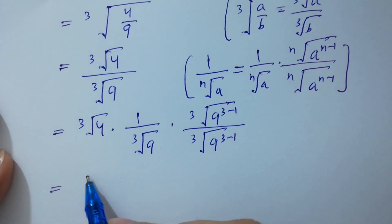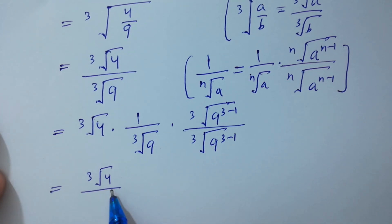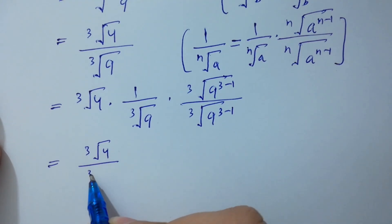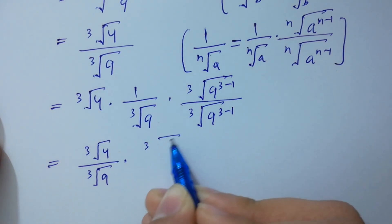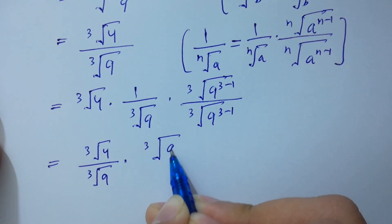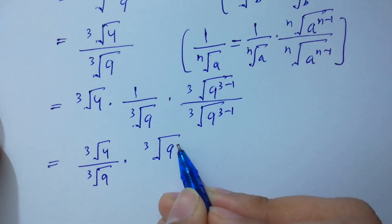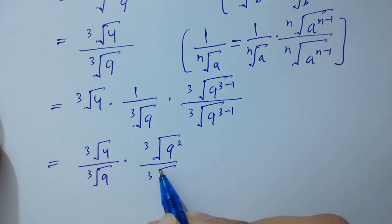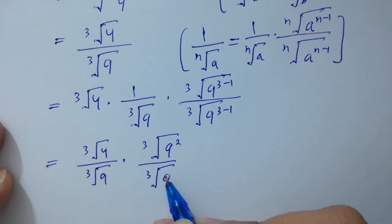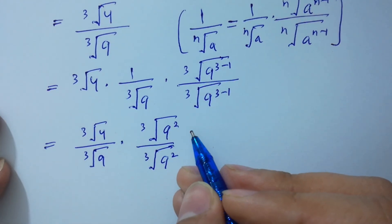Next, cube root 4 over cube root 9 times cube root 9 to the power 3 minus 1 simplifies to cube root 4 times cube root 9 squared, over cube root 9 to the power 2.